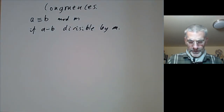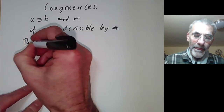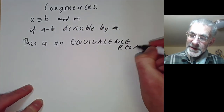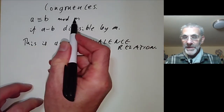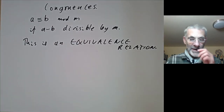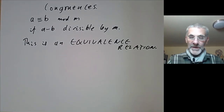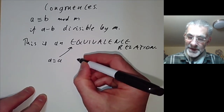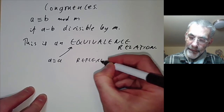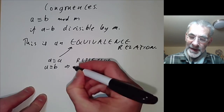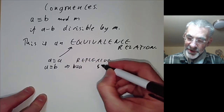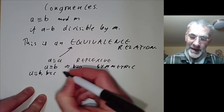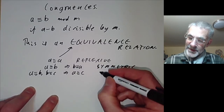The key point is that congruence is an equivalence relation. So we should think of two numbers congruent modulo m as being in some sense equal. We need to check the three conditions: first, reflexivity — a is equivalent to itself; second, symmetry — if a is equivalent to b, then b is equivalent to a; and third, transitivity — if a is equivalent to b and b is equivalent to c, then a is equivalent to c.